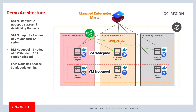At a high level, this is what the setup looks like for the demo. We will be creating a highly available Kubernetes cluster with two node pools spread across three availability domains within a region. The first node pool consists of three nodes of VM standard 1.4 shape virtual machine instances, and the second node pool consists of three nodes of BM standard 2.52 shape bare metal instances. We will deploy Apache Spark on each node pool and measure performance by running Spark jobs using Zeppelin, and also scale the number of Spark worker pod replicas.